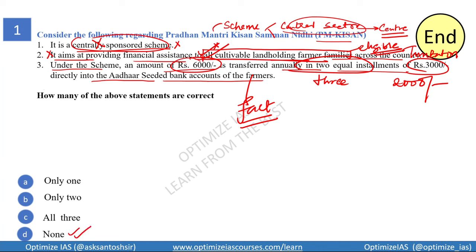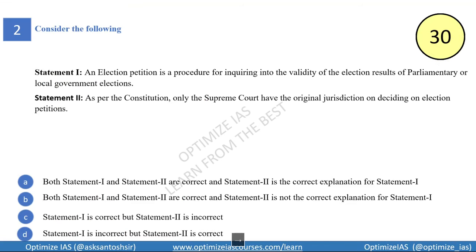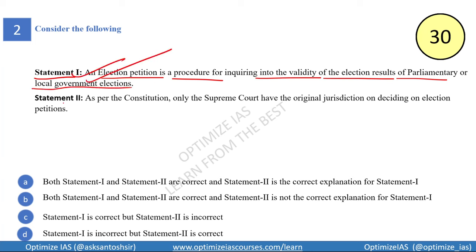The second question is framed on election petitions. With elections ongoing in some state assemblies and the general election underway, there is a provision of election petitions. Statement one: an election petition is a procedure for inquiring into the validity of an election result of a parliamentary or local government election. This is a correct statement.